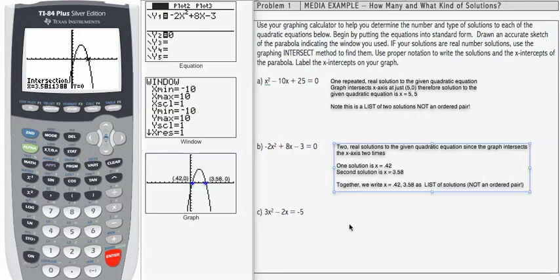So at the right-hand side, I have one solution as 0.42. The other is 3.58. I write them together as a list with a comma in between. Note this is a list of solutions, not an ordered pair.